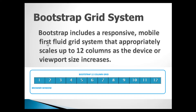The grid system allows up to 12 columns across the page. Consider an example: if this is a browser window, then Bootstrap has divided this whole window into 12 columns of equal width.